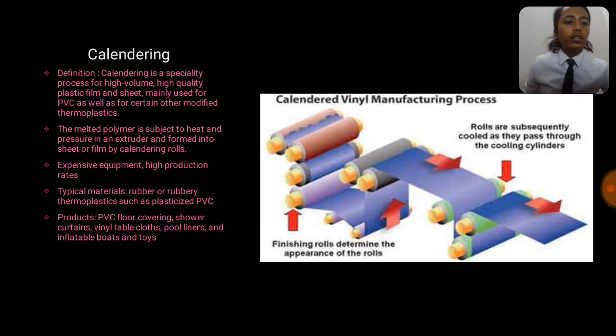Besides, the diagram is the calendaring process. You can see the finished rolls determine the appearance of the product. Then the rolls are subsequently cooled as they pass through the cooling cylinder.